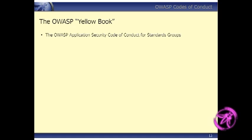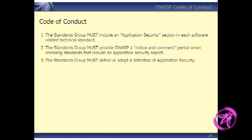The Yellow Book is aimed at standards groups — people like British Standards, ANSI, IETF, ITU, ISO, NIST, et cetera. Our wish here is that every technical standard involving software should take time to consider whether there are any possible application security risks in the material the standard is talking about, and if so, address that in the standard. So: include an application security section where relevant, ask for comment on the standard and involve OWASP in that process, and come up with some definition of application security. OWASP could come up with a definition, though it doesn't necessarily mean that's relevant to every organisation or sector.